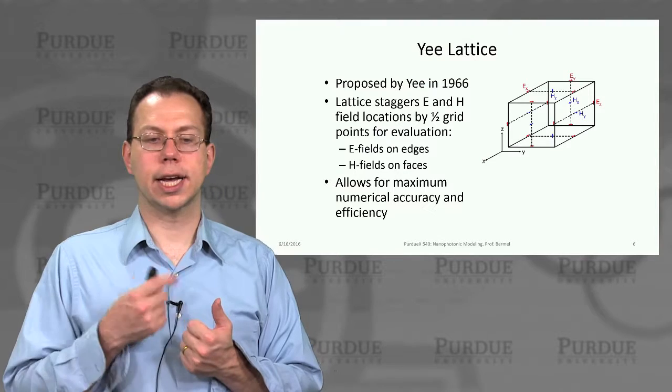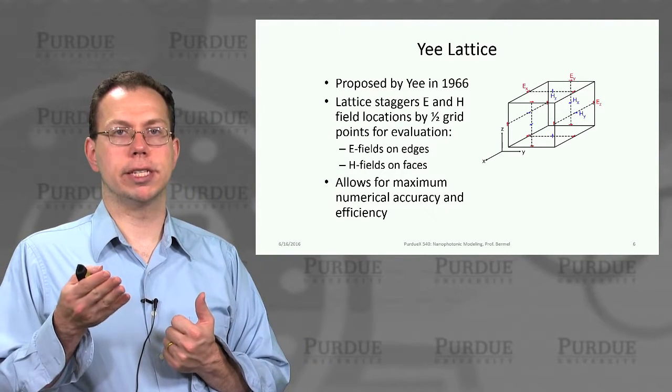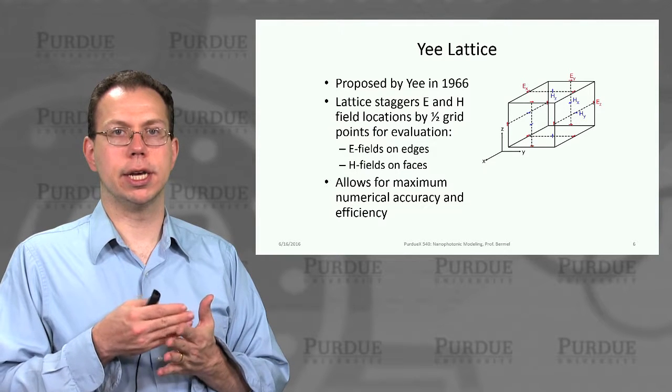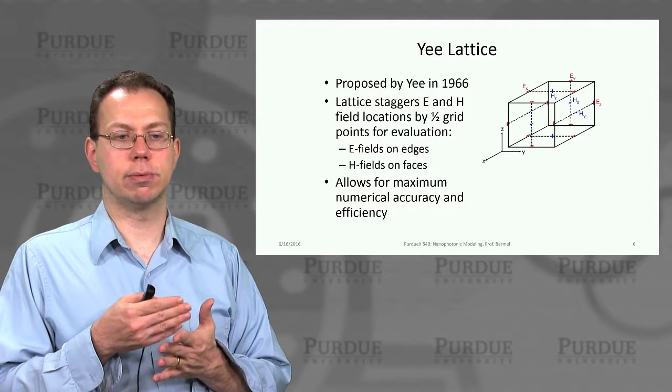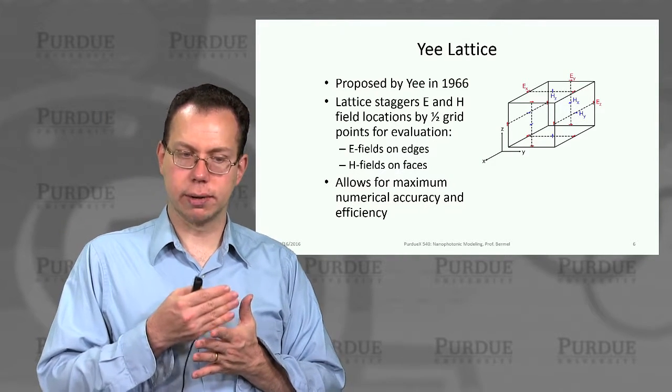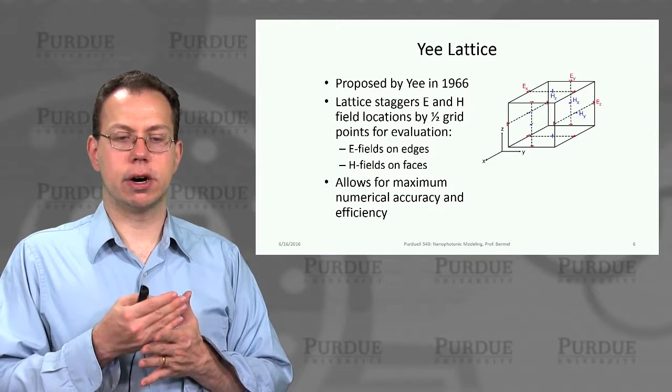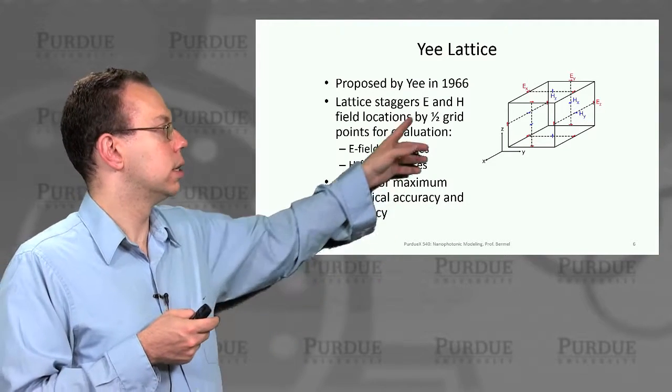So, of course, that's where the Yee lattice comes in, and I mentioned that we were basically looking at a 1D Yee lattice before, where E and H were staggered by half a grid point. So now we're going to actually stagger E and H by half a grid point in all three dimensions. And so then that means that we'll have all the E fields on the edges. Okay?